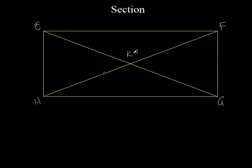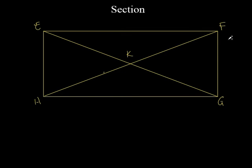Let's review this before we get to the questions. This is a rectangle, so what kind of angles do we have at E, F, G, and H? They're right angles — 90 degree angles. Since it's a rectangle, the opposite sides are equal, the opposite angles are equal, and the diagonals bisect each other. Now, what's specifically true about a rectangle? The diagonals EG and FH — they're equal to each other.